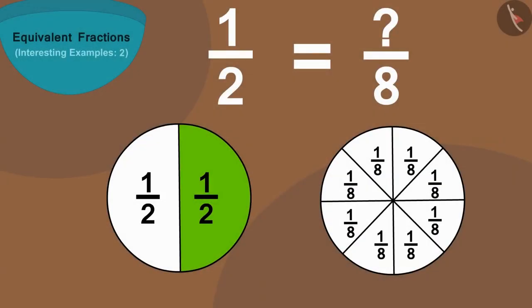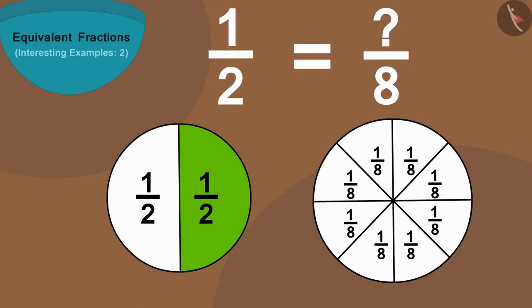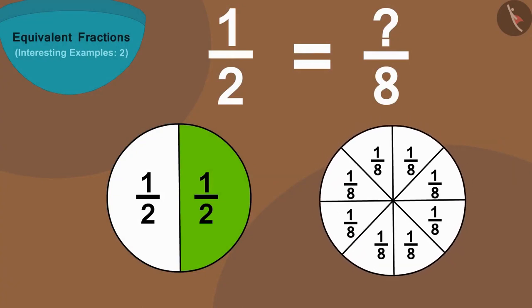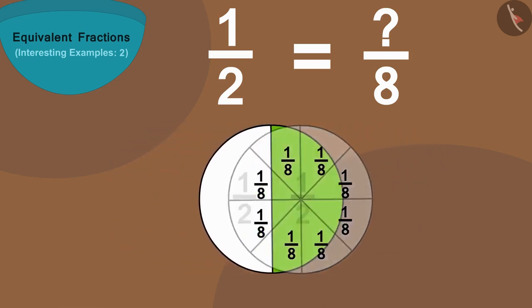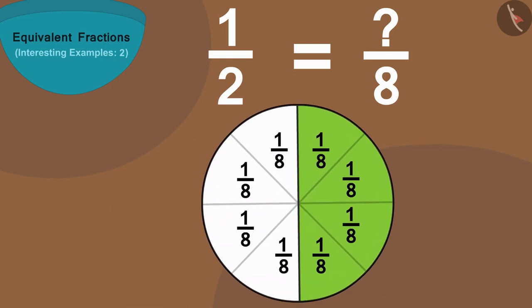Now, we have to find out how many parts of these 8 parts should we take so that it is equal to half of the first circle. If we put these on top of each other, then we can see that 8 parts of this circle are equal to 2 parts of the first circle. And, 4 parts of this circle is equal to 1 colored part of the first circle.